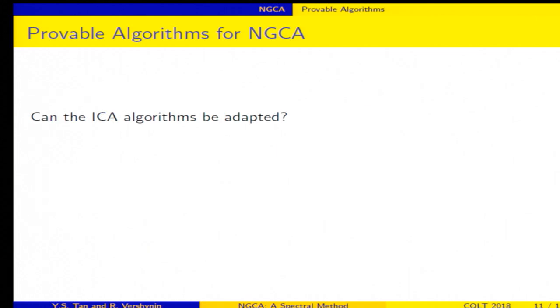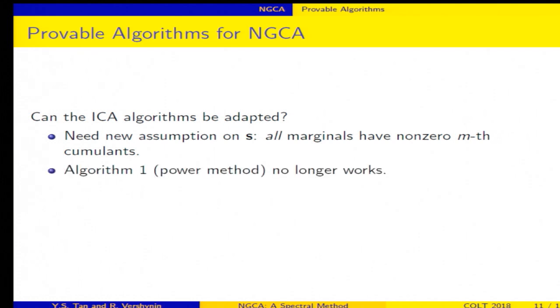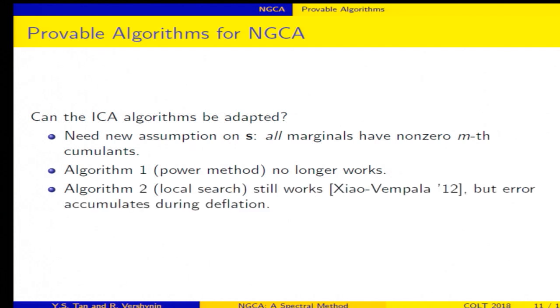Alright, so we can still ask whether the algorithms can be adapted. So first, we have to realize that we need new assumptions. So for ICA, we assume that the SIs have non-zero M cumulants, but now we lose the privileged directions. We no longer have these N privileged directions, so we instead have to assume that all the marginals have non-zero M cumulants. Okay, so even with this assumption, the power method fails because we no longer have this low-rank structure. We can still do local search. We can adapt this algorithm. However, there are some drawbacks.